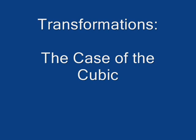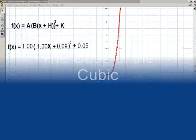Today we are going to look at transformations of functions. A transformation occurs when the graph of the function is moved from its original position. As an example of a function being transformed, we will look at the graph of y equals x cubed.